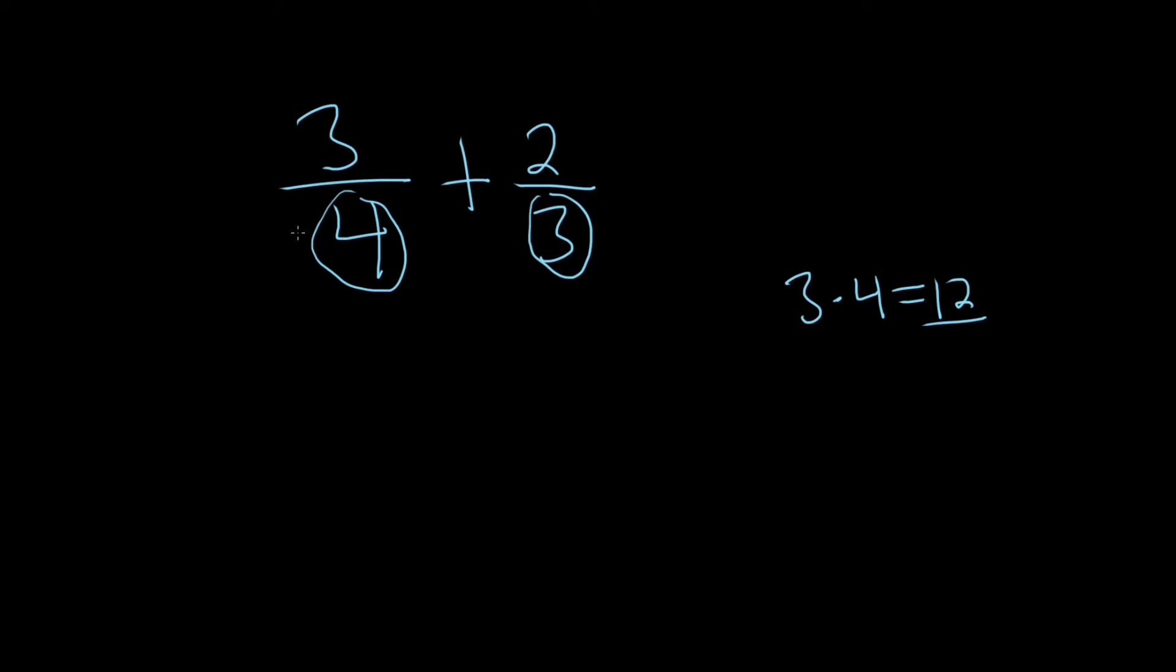All right, so here we have a 4. What are we missing to get the common denominator? I'm going to write the 3/4 again. We're missing a 3, right, because we already have the 4. So you multiply by 3 over 3. Then you put a plus sign.